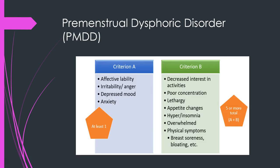PMDD — premenstrual dysphoric disorder — is a controversial disorder in this category. You need at least one symptom from Criterion A: affective lability, irritability or anger, depressed mood, or anxiety. Then you need at least five total symptoms from both Criterion A and Criterion B, which includes decreased interest in activities, poor concentration, lethargy, appetite changes, hypersomnia or insomnia, feeling overwhelmed, and physical symptoms like bloating or breast soreness. There's ongoing controversy about whether this pathologizes typical experience or appropriately identifies women more severely affected.